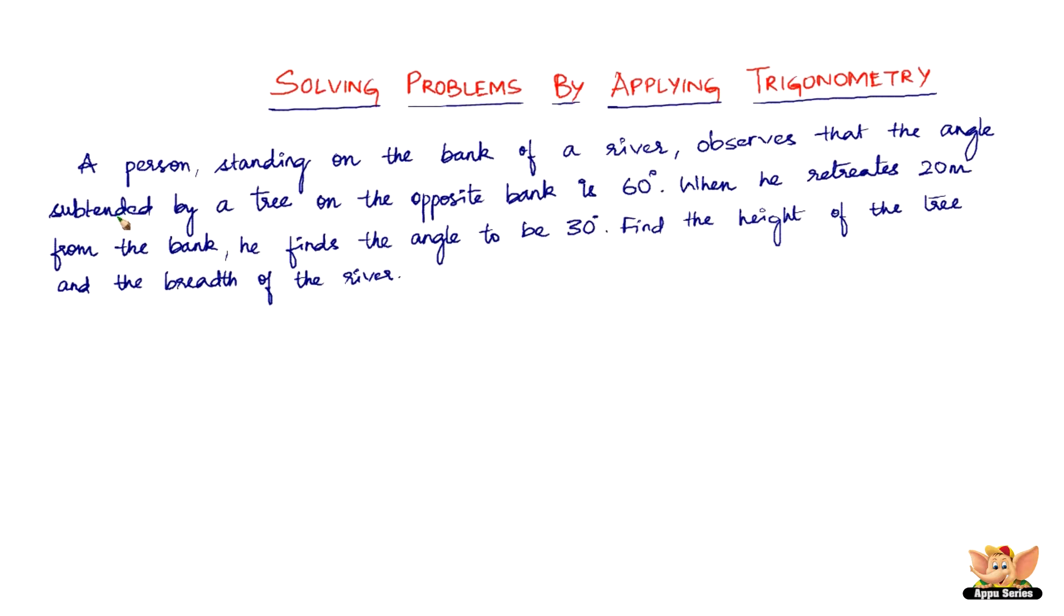We've got a problem here which reads like this: A person standing on the bank of a river observes that the angle subtended by a tree on the opposite bank is 60 degrees. When he retreats 20 meters from the bank, he finds the angle to be 30 degrees. Find the height of the tree and the breadth of the river.